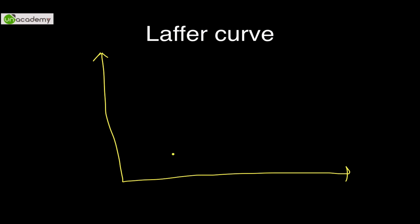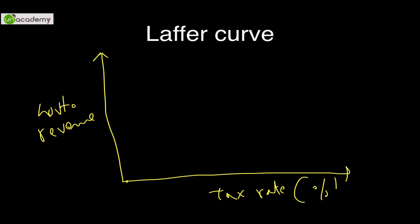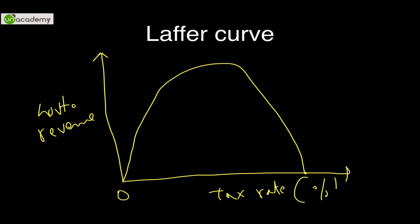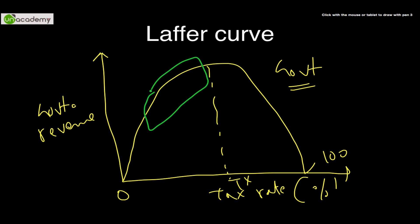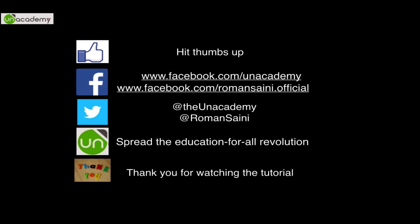The Laffer Curve is drawn with government revenue on the Y-axis and tax rate (as a percentage) on the X-axis. The curve starts at zero, peaks at T-star, and then falls back to zero at 100% tax rate — unlike a Gaussian curve which never touches the axes. After T-star, revenue falls as the rate increases. This is why the optimal tax rate is kept between 20 to 50%, as followed by most countries worldwide. That concludes this video — please share and be part of this education revolution.